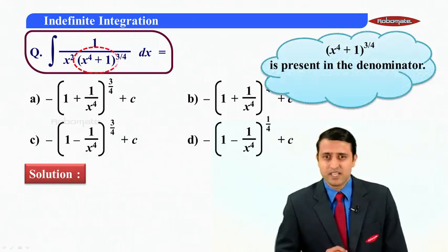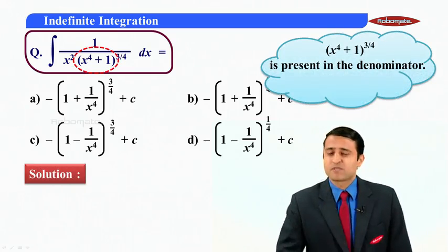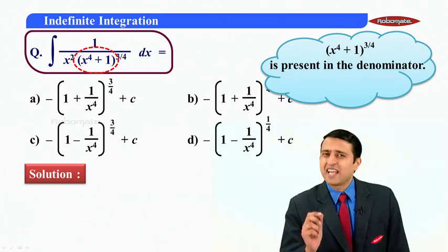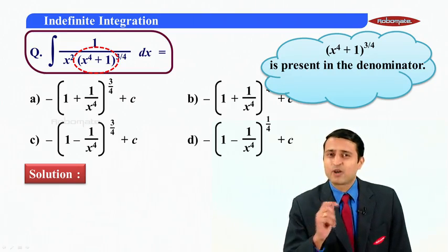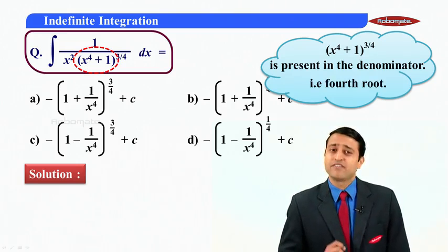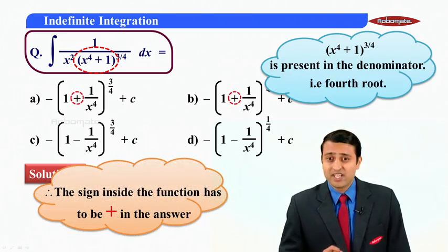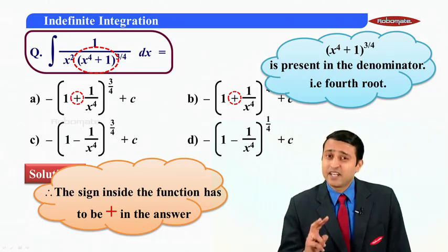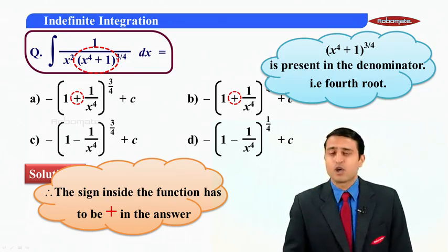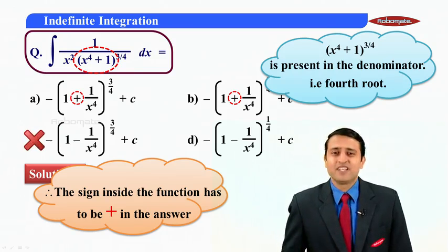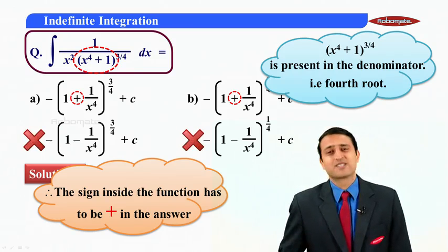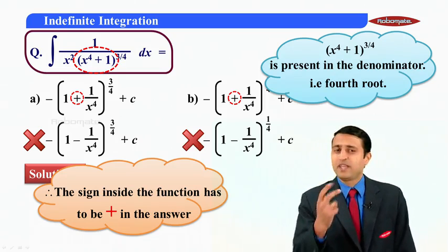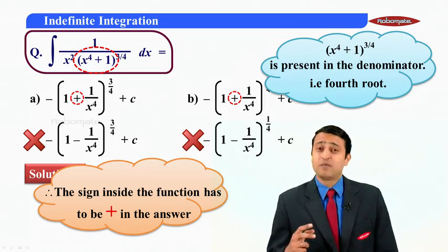That is 4th root is present in the denominator because of which the sign inside that bracket cannot change. It has to be a plus only even in the final answer. So can I say inside the bracket that should be a plus and that condition is satisfied only in two options. Option a and option b. So effectively c and d are not the right answers. So we are already down to only two options. Now how do I eliminate one more option?